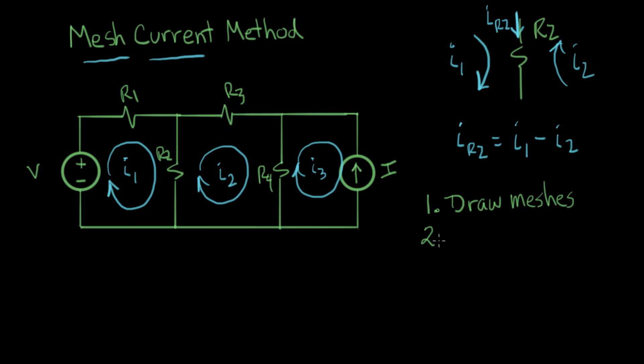The second step is to solve the easy ones. When we say an easy one, here's an example. The current source I right here defines what I3 is, so I3 is an example of an easy current to solve for.